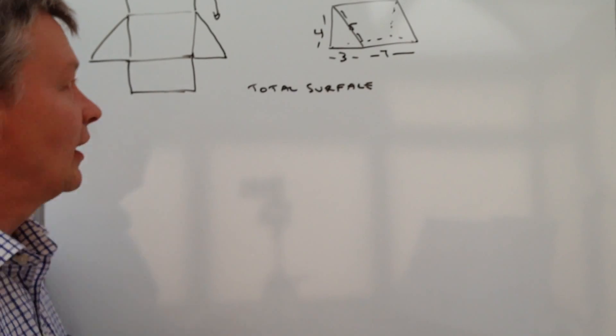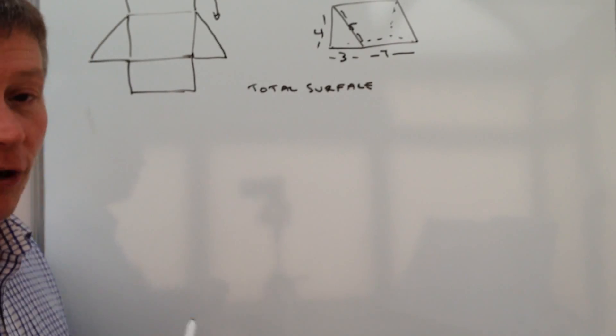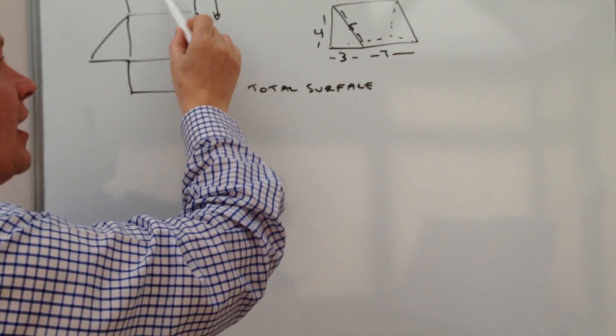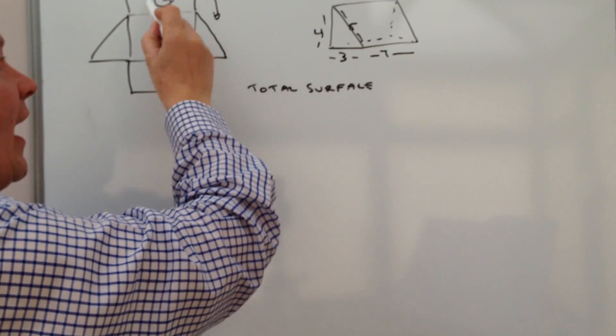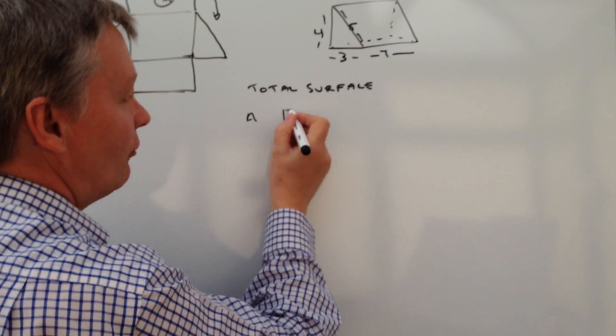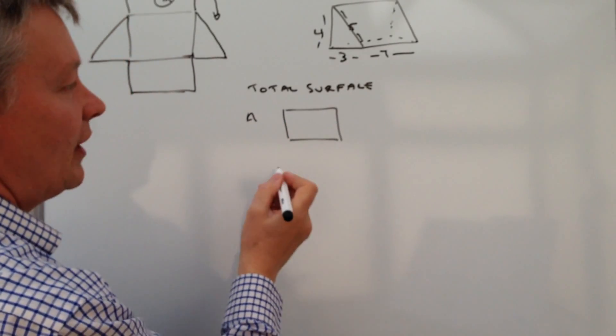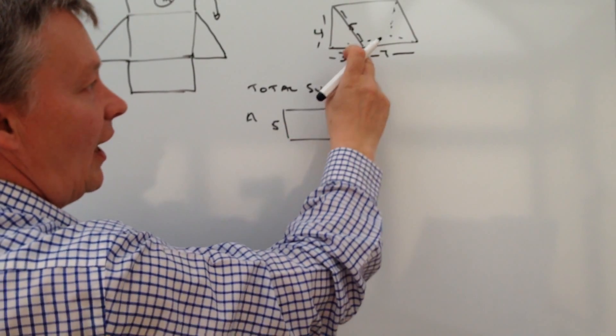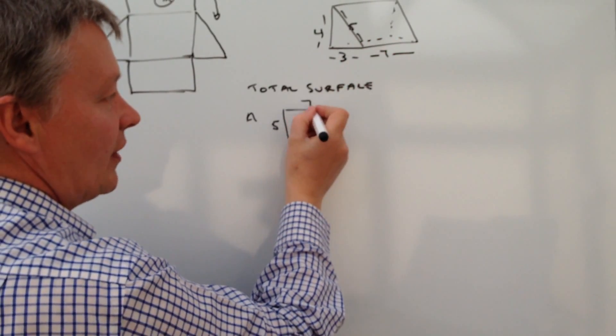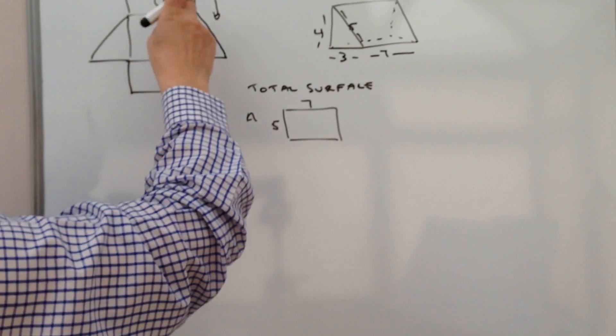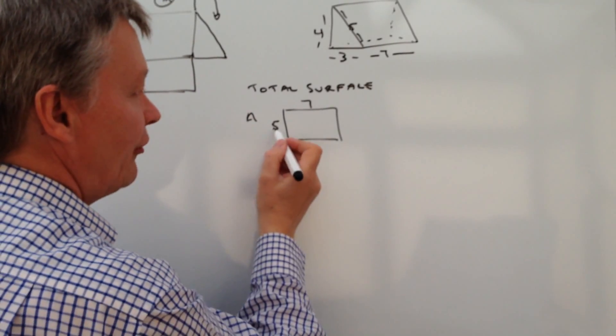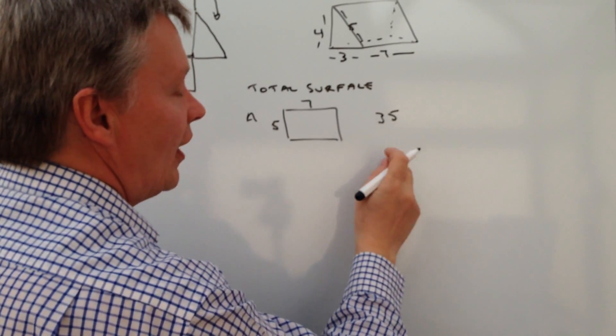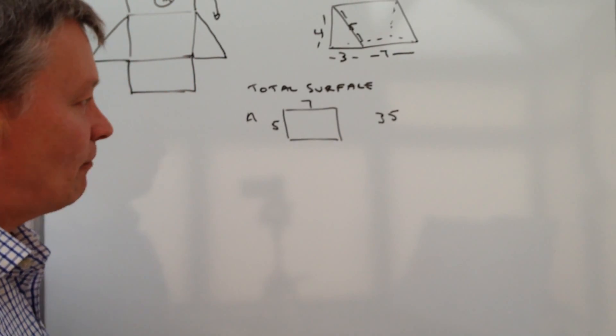What we've got really is three rectangular bits. We've got this top flap here, which is this piece here. I'm going to call it A. So A is a rectangle, and that rectangle has a length here, which we're given as five and the width here, which we're given as seven. So the A rectangular surface area is going to be five times seven, which is going to be 35. And we know it's centimeters squared.